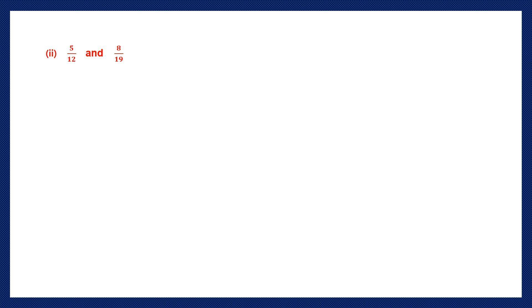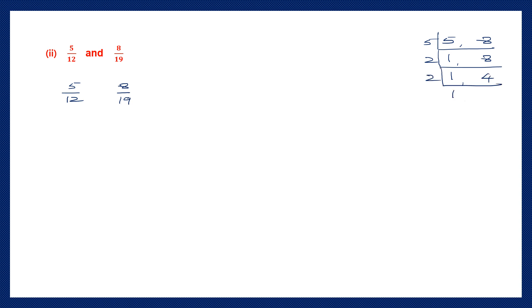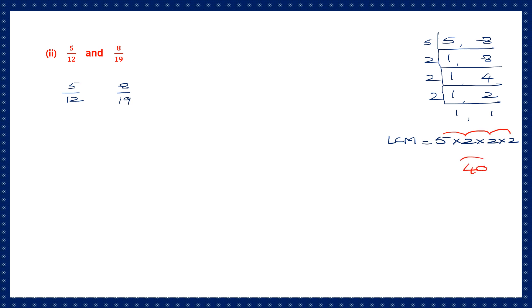Question 2: 5 by 12 and 8 by 19. We're going to make the numerators equal, so let's take the numerators 5 and 8 and find the LCM. Starting with 5: 5 ones are 5, write down 8. Continue with 2: 2 fours are 8. Continue with 2: 2 twos are 4. Again with 2: giving 1 and 1. The LCM is 5 into 2 into 2 into 2. So 5 twos are 10, 10 twos are 20, 20 twos are 40. The LCM is 40, which will be our common numerator.